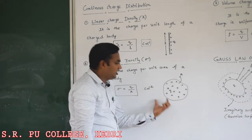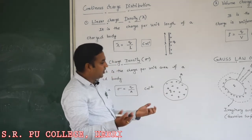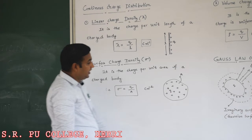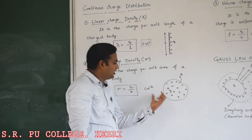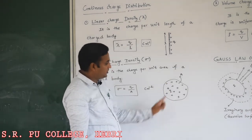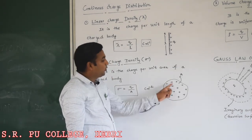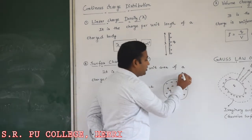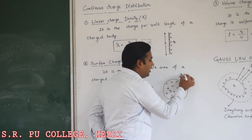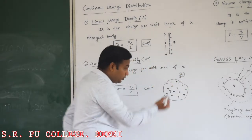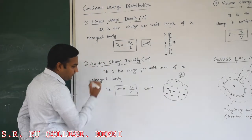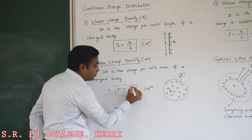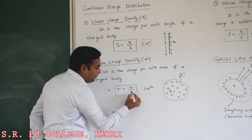The unit for surface charge density is coulomb per meter square. We can understand this using the diagram. We consider one conductor — it may be regularly shaped or irregularly shaped — having total charge Q on its surface and total surface area A. So surface charge density sigma equals Q divided by A, that is total charge per unit area.